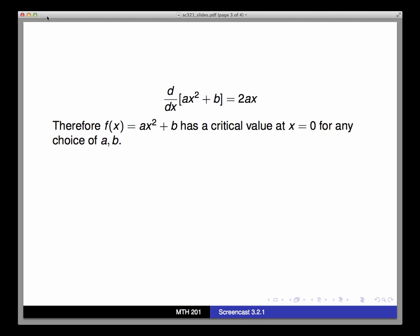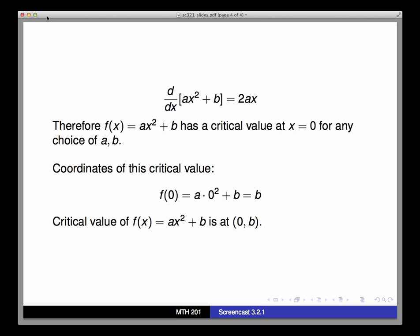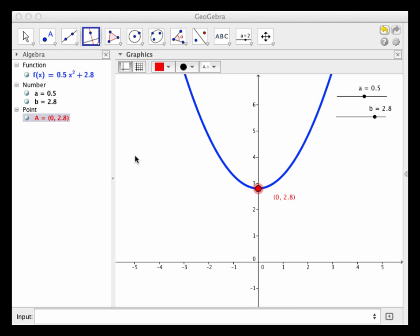And at this point, the y value is f(0) = a times 0 squared plus b, and that's equal to b. So in other words, we've just found out that every parabola in this family has a critical value at x = 0, y = b, where b is the parameter from the function definition. And we can see this in the GeoGebra sketch.